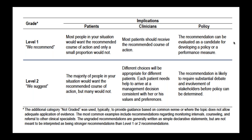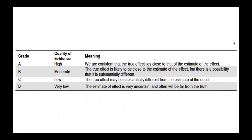A level two recommendation, which is weaker, uses the terminology 'we suggest,' meaning a majority would want the recommended course of action but many would not. The physician, nephrologist, or transplant physician has leeway to make some choices, whereas a level one recommendation means there should be a very strong reason not to implement it.